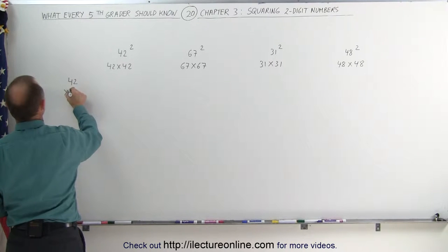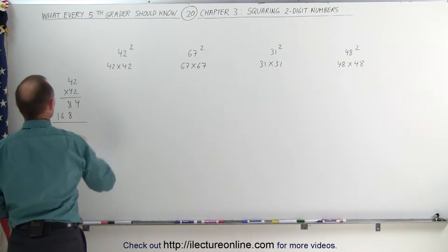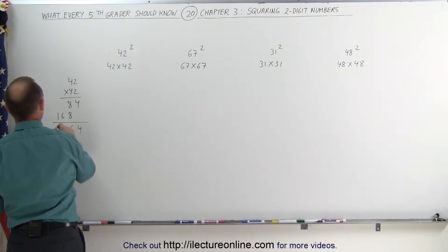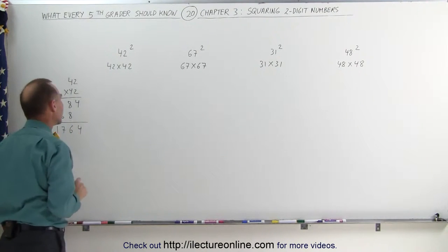42 times 42. 2 times 2 gives you 4. 2 times 4 gives you 8. 4 times 2 gives you 8. And 4 times 4 gives you 16. When you add them all together, you get 4. 8 plus 8 is 6. Remember 1. Add that to the 6, you get 7. And then you get 1. 1,764.